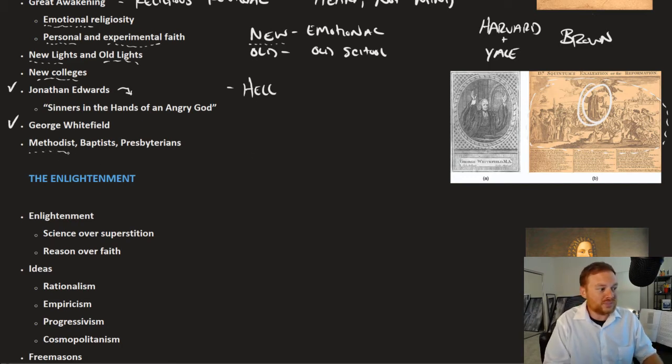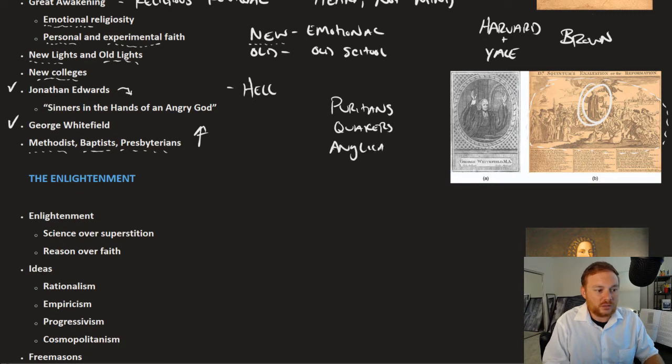This break in religion between new and old led to the rise of certain religious groups. New groups like Methodists, Baptists, and Presbyterians were on the rise. These became much more popular denominations. A lot of the more old school religions that we talked about, for example the Puritans or the Congregationalists, the Quakers, the Anglicans or the Church of England, these were all on the decline, less and less members that joined or were part of those churches.